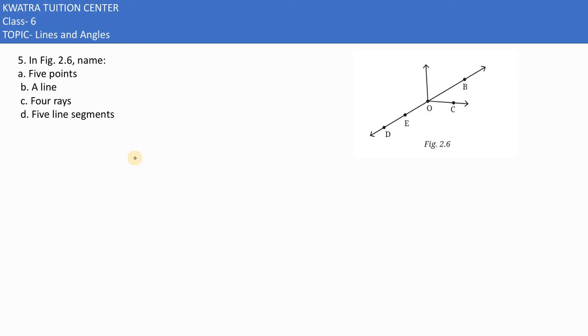In the fifth part, it says in figure 2.6, name 5 points. What do we need to do in the first situation? We need to name 5 points mentioned according to this diagram.